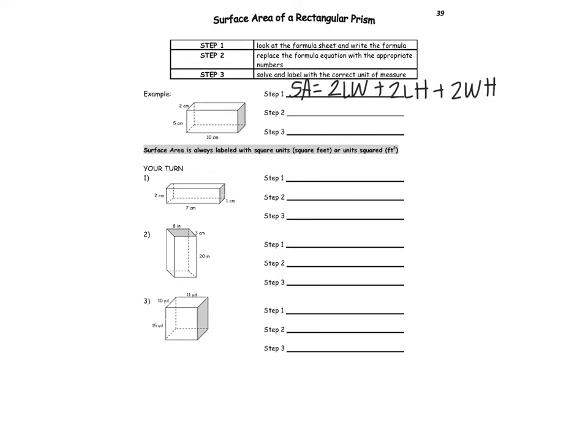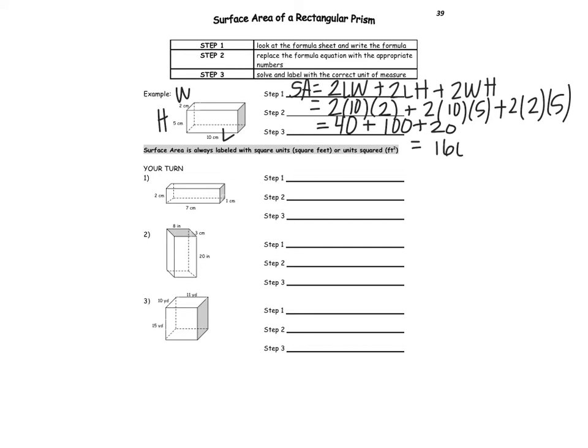So on page 39, let's try this first example here. Same thing, label your length, width, and height. And like I said with volume, it really doesn't matter if you label yours differently because addition and multiplication are commutative. That's 10 times 2 plus 2 times 10 times 5 plus 2 times 2 by 5. So I technically make mine into four steps. I do my multiplication. So in step 3, I've multiplied my numbers together. Then finally, I add everything together. So I would get 160 centimeters. And because it's still technically area, it's power 2. Remember area, square area.